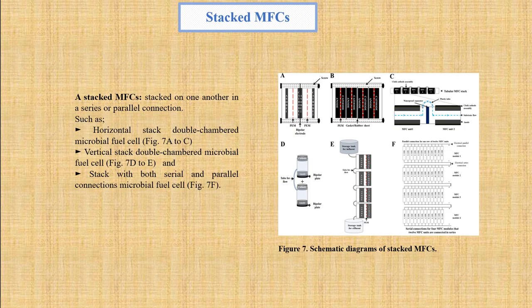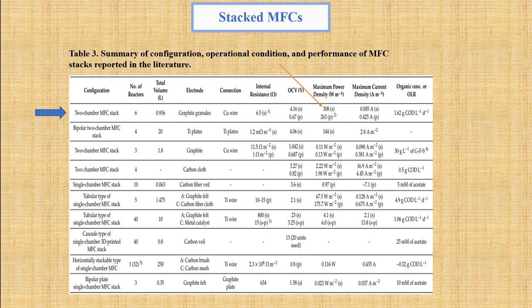Next is the Stacked Microbial Fuel Cells section. Stacked microbial fuel cells form a fuel cell battery by being stacked on one another in series or parallel connections, including horizontal stack double-chambered (Figure 7A-C), vertical stack double-chambered (Figure 7D-E), and stacked with both serial and parallel connections (Figure 7F). The type of electrode, stacking direction, reactor shape, connection method, and modulation all affect output efficiency, as shown in Table 3. Based on polarization curves, the maximum power density for six horizontally stacked microbial fuel cell units can be as high as 308 W/m³ for series connections and 263 W/m³ for parallel connections.